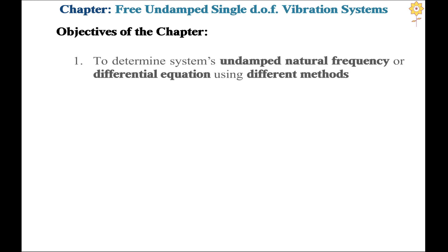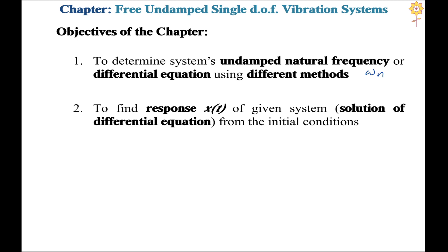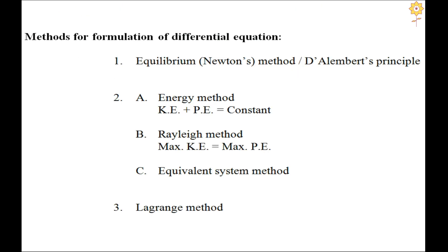Moving to the present chapter on free undamped single degree of freedom vibration systems, the objectives are: to determine the system's undamped natural frequency omega n or the differential equation using different methods; and to find the response — that is, displacement as a function of time — which is the solution of the differential equation from given initial conditions x(0) and x-dot(0).